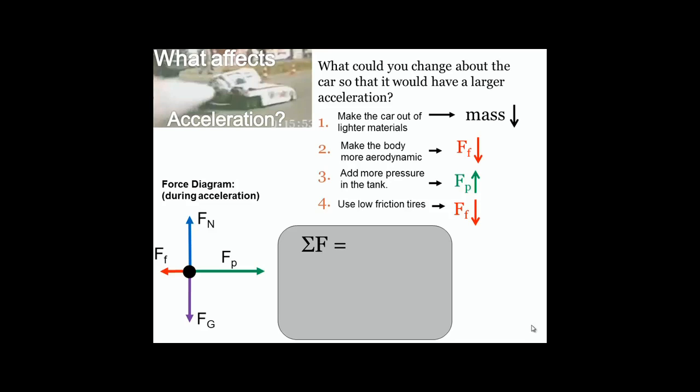So the only two forces then involved in the sum of the forces would be the pushing force plus the frictional force. Because the frictional force is pointed the opposite way, the value for the sum of the forces would be the amount of the pushing force minus any frictional forces felt, whether that's frictional force from the air or frictional forces from the road.